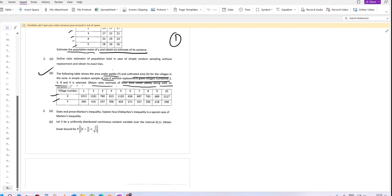The cultivated areas for the selected villages are: village 3, village 5, village 8, and village 9. We'll calculate the ratio estimate of the total area using these villages.